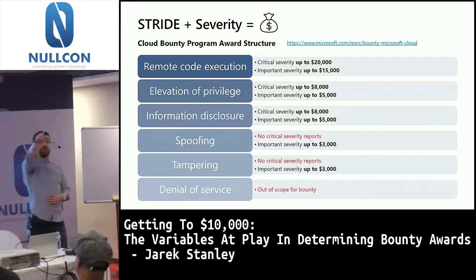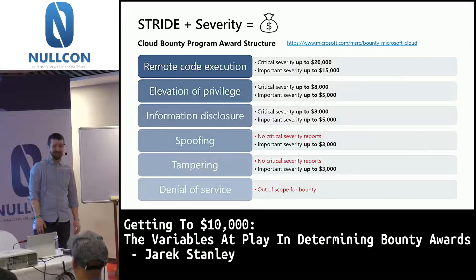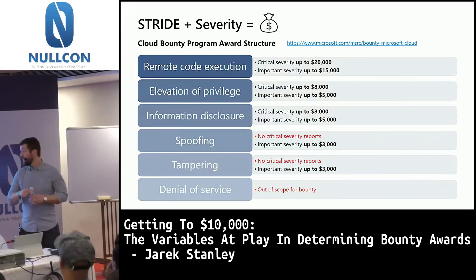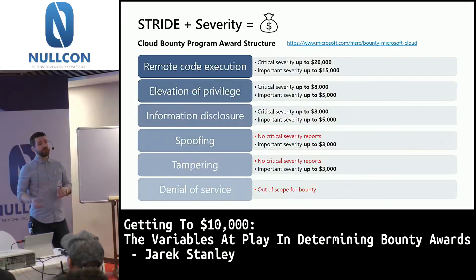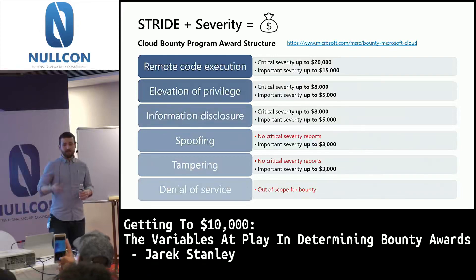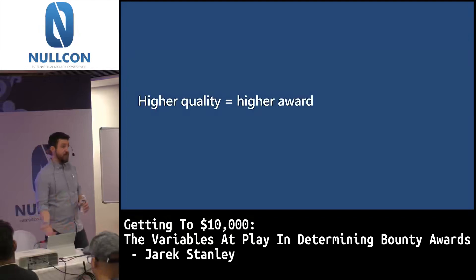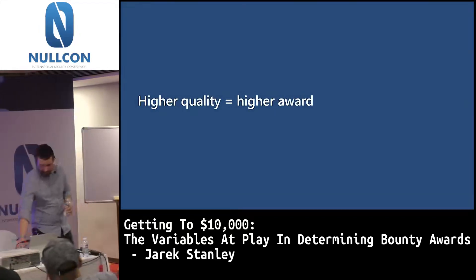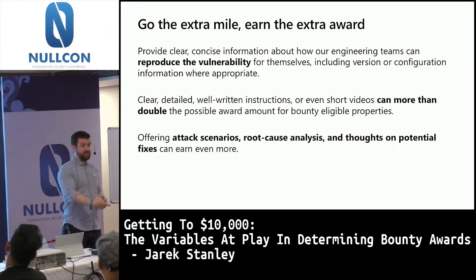For remote code execution, critical capability, we offer up to $20,000 in the Cloud bounty specifically — quite a significant bounty award. Elevation of Privilege at critical severity is $8,000. Even spoofing, where a lot of cross-site scripting falls, is $3,000 for an important severity, high quality award. But you'll notice the phrasing 'up to' — how do we decide up to what? There's another variable at play called quality. The higher quality your report, the more bounty we offer.